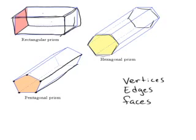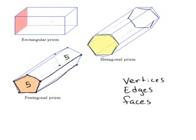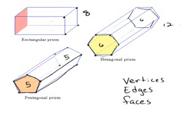On the pentagonal prism there are five vertices on one end and five vertices on the other end as well. The reason it has five on each end is because it's a pentagon and has five sides, so it has a total of ten vertices. On the rectangular prism it only has four on each side — because it's a rectangle and rectangles only have four sides — so four and four gives eight. The hexagon has six sides, so it would have six vertices at each end for a total of twelve.